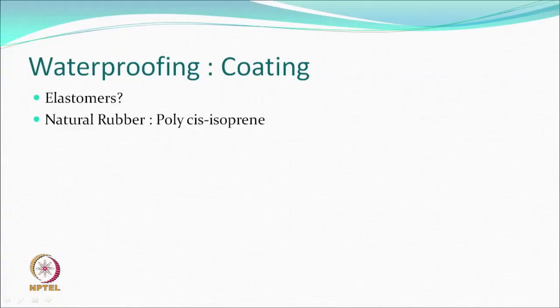Low glass transition temperature means polymers called elastomers. Elastomers are compounds that can stretch easily — for example, to 200–300% — and then recover. They are very soft. If a polymer can stretch and recover with such elasticity, those are called elastomers.